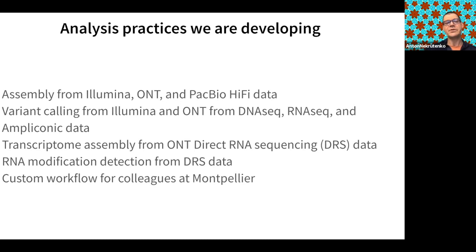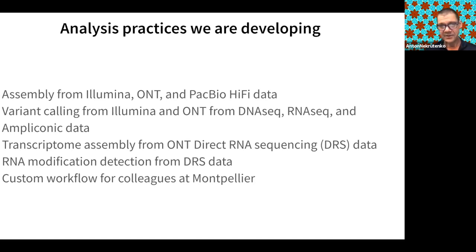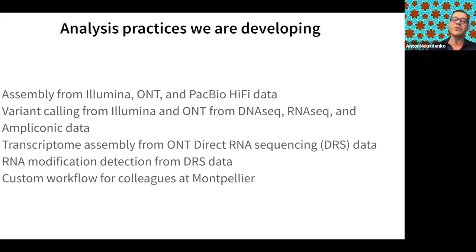Variant calling is particularly important for SARS-CoV-2. There are two sources of data for genetic variation analysis: RNA-seq type datasets produced directly from RNA, and ampliconic data, which is much more widespread — COG-UK data is almost exclusively ampliconic. There are also new types of data such as direct RNA sequencing, which is very interesting for SARS-CoV-2 as it's an RNA virus, enabling RNA modification analysis and more.